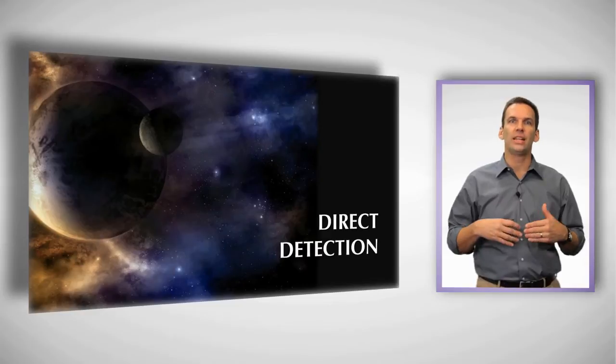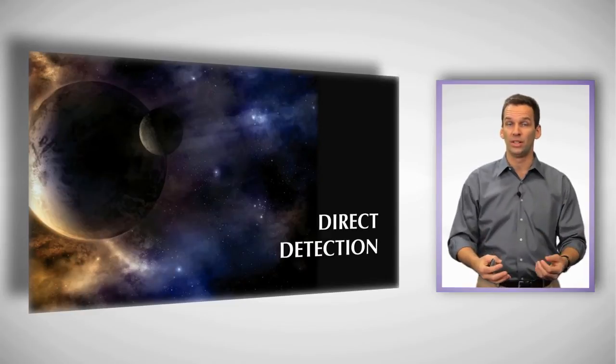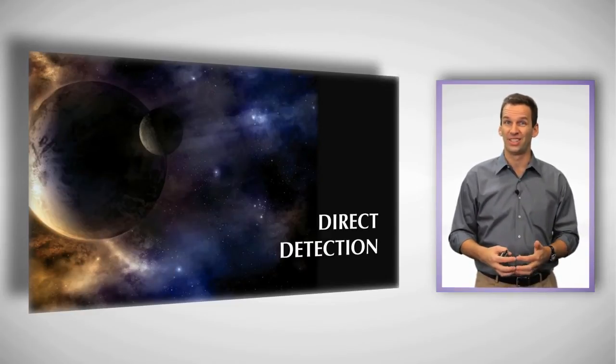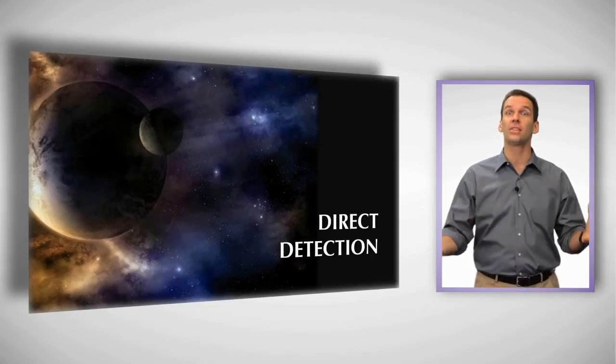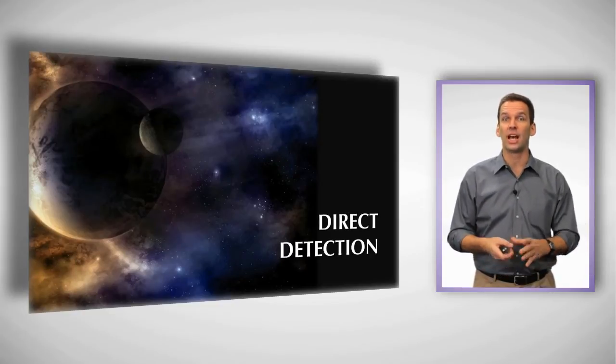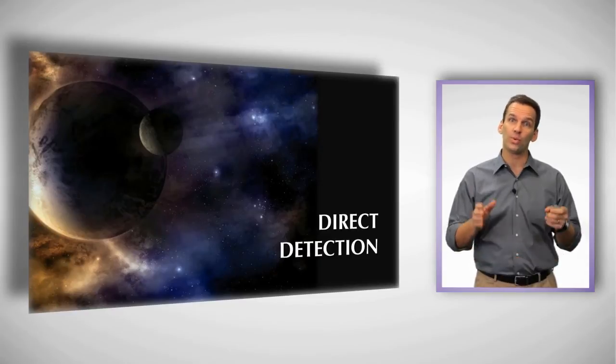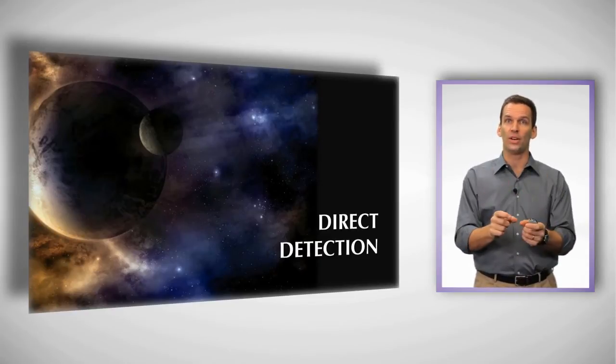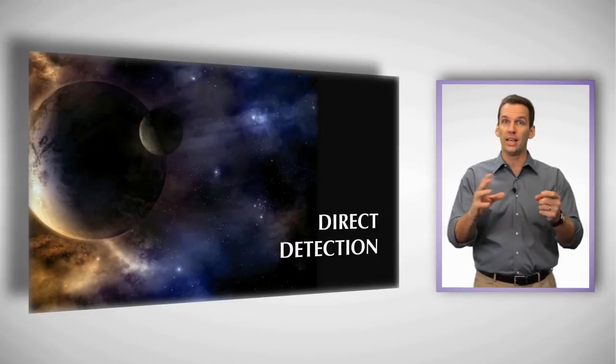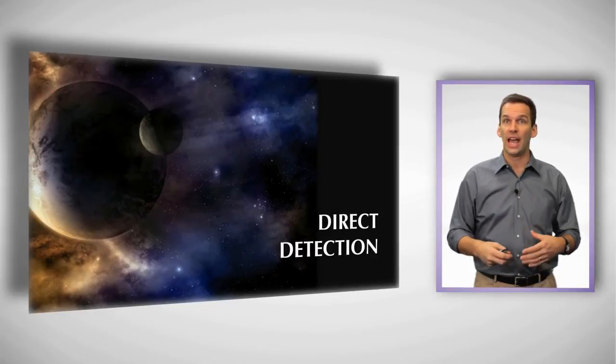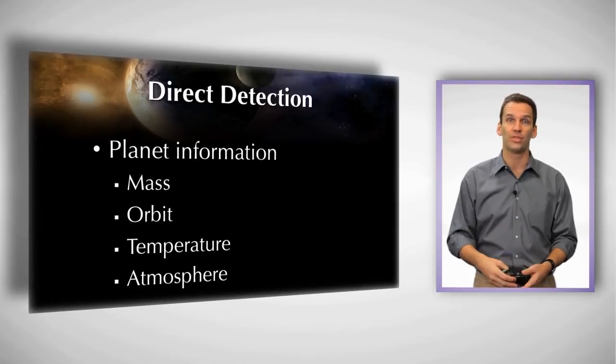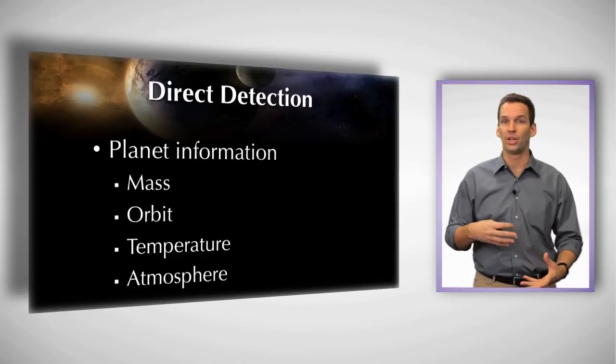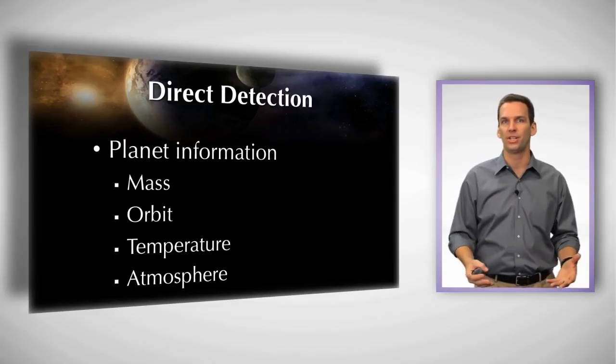Now the technique that astronomers are really working to develop, that we don't have sufficient sensitivity yet, but is going to be the one that will give us lots of information about planets, is actually the direct detection. And that's where we look out, we're able to mask off the light from the star, see the light from the planet itself, and get information about how large the planet is, how bright it is, what kind of atmosphere it has, the temperature, mass orbit, we get just a wealth of information.